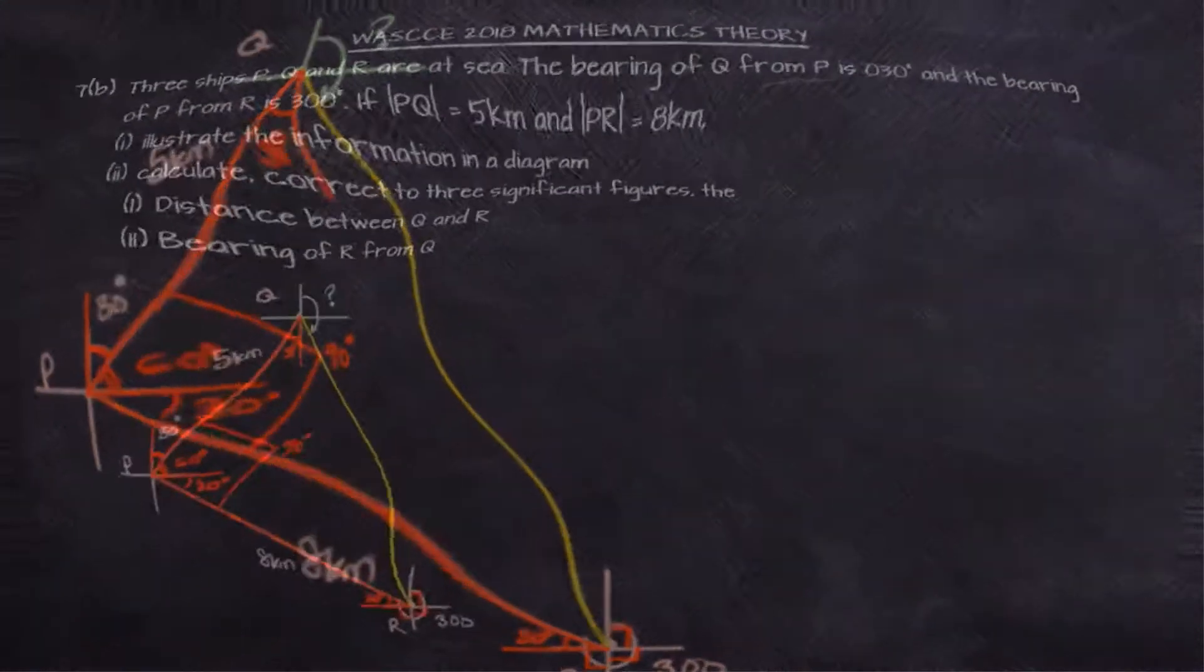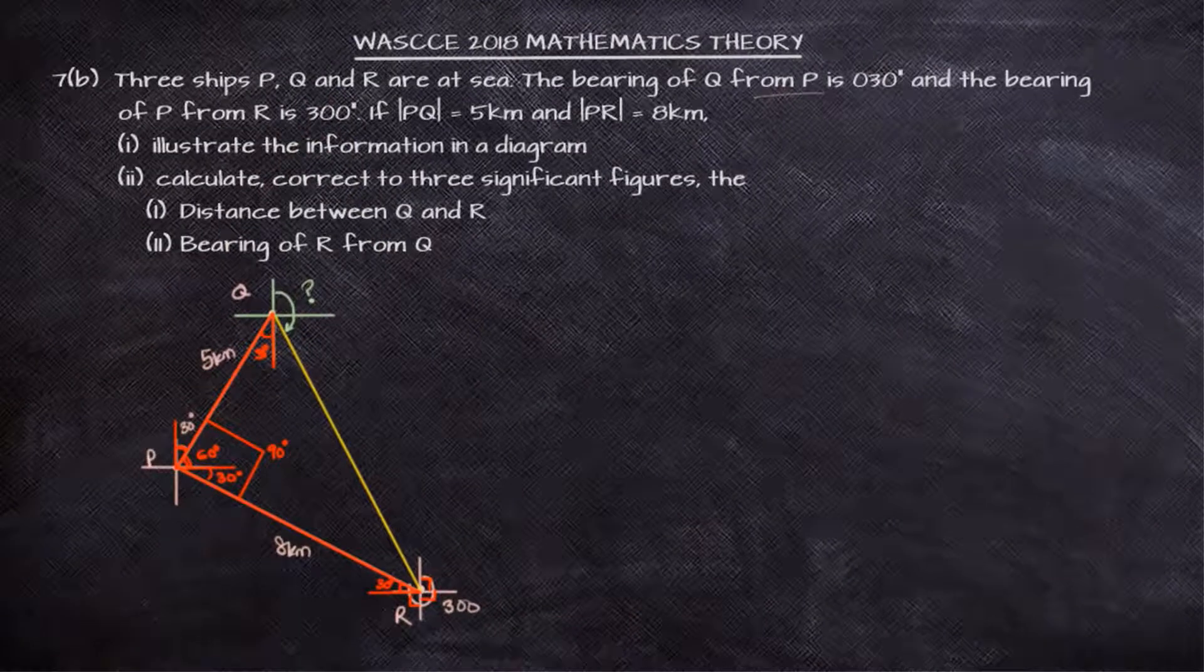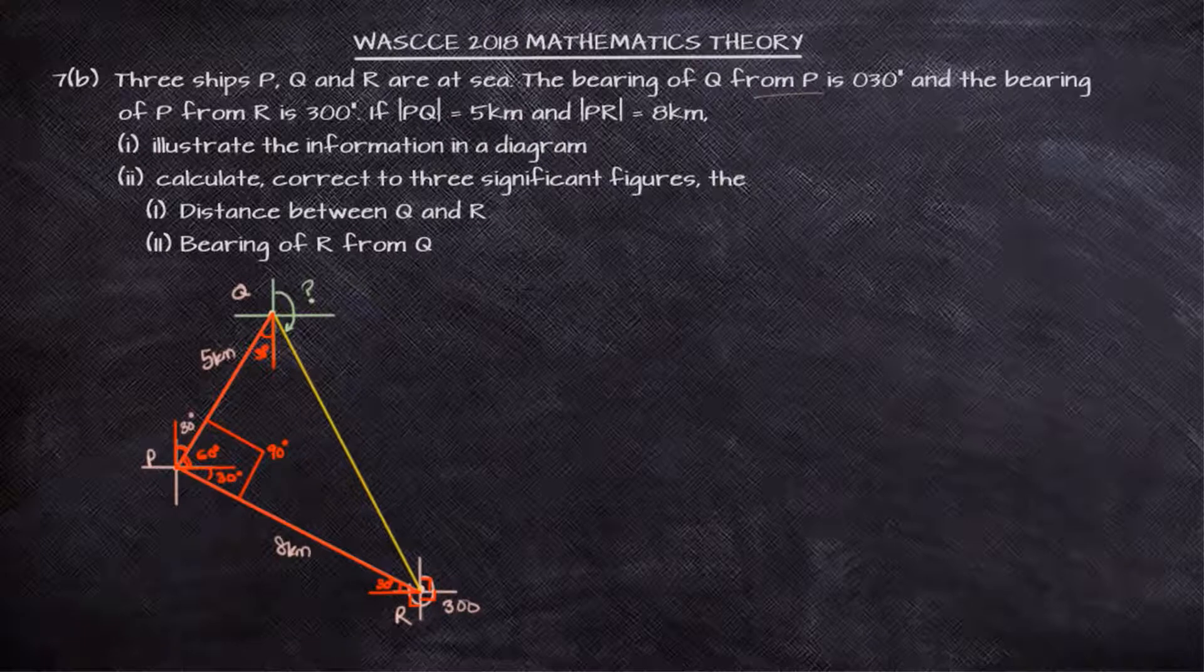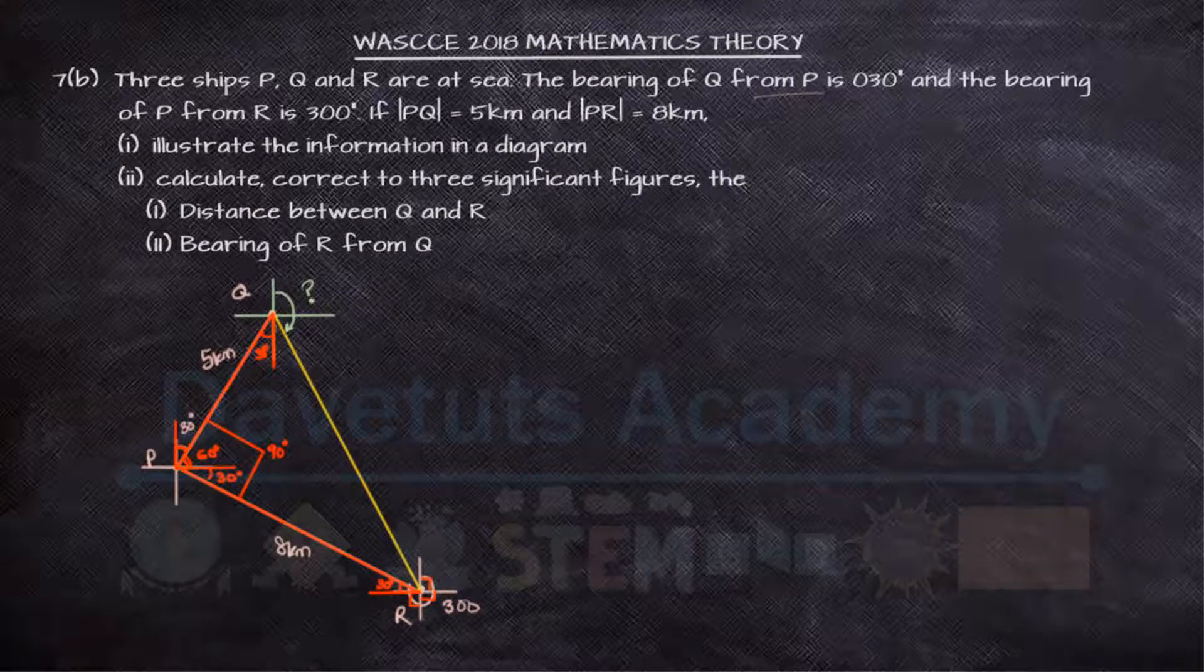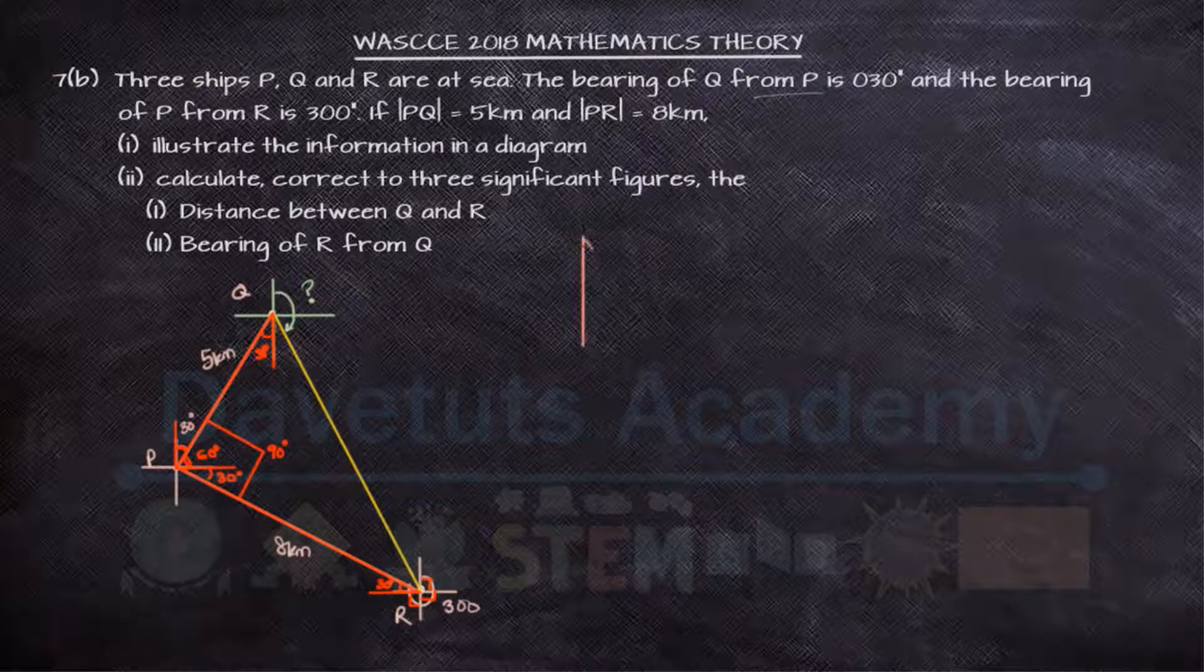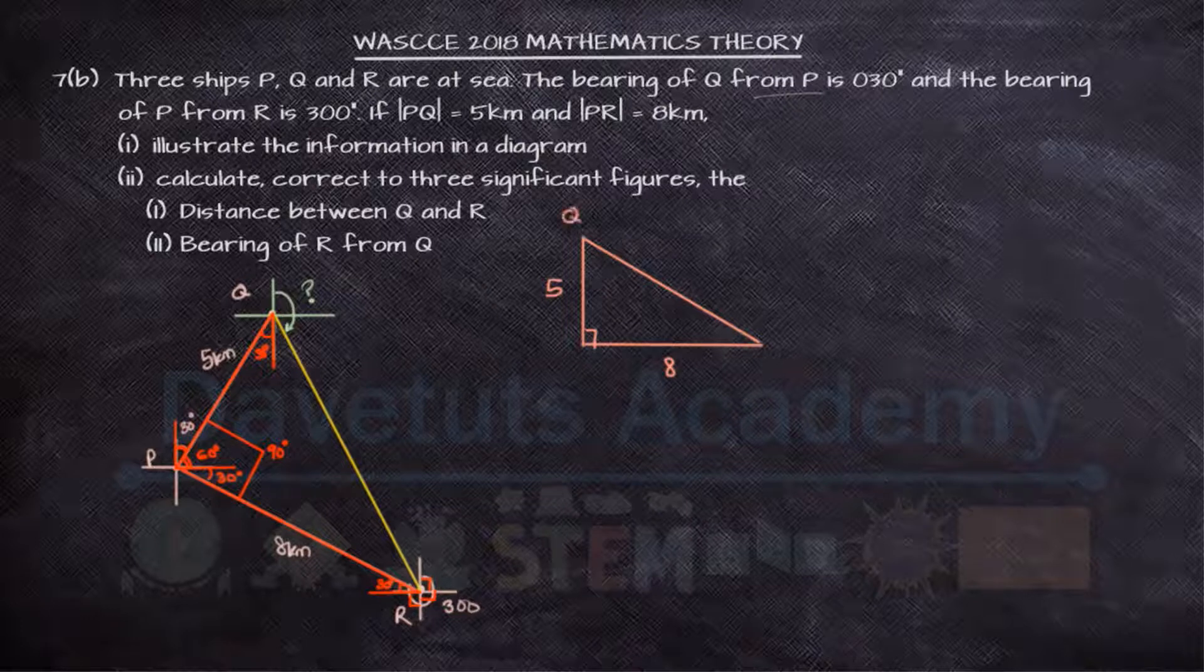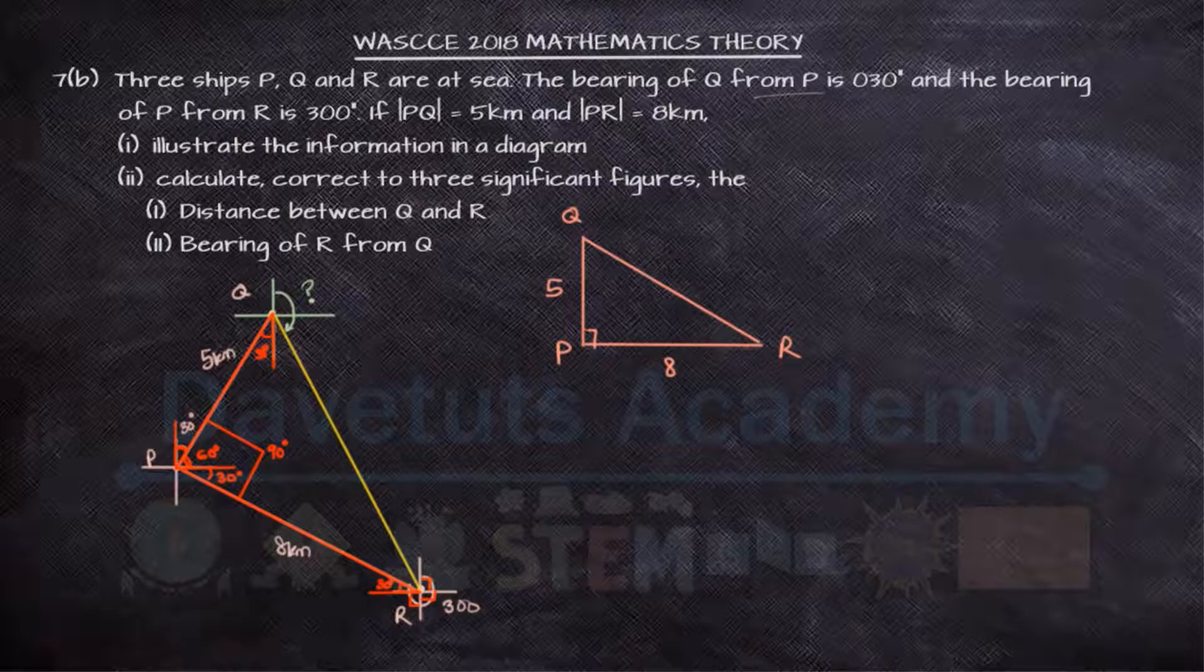With this information, we can notice that we can find the distance between Q and R and the bearing of R from Q. If we draw out this triangle, we are noticing a right angle triangle with proper labeling: 5, 8, then Q, P, and R.